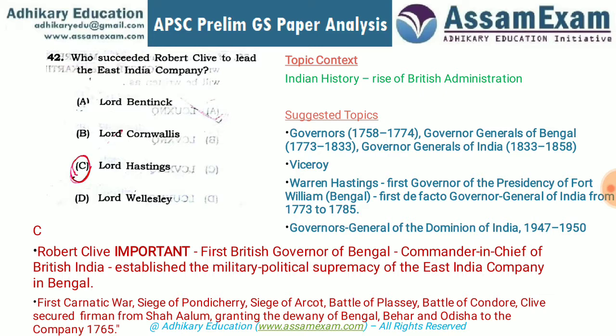After Warren Hastings, there is a long list of governors and governor generals. After the revolt of 1857, the post was changed to Viceroy. Robert Clive is very important — he was the first Governor General of Bengal, commander-in-chief of British India, and led many wars including the First Carnatic War.